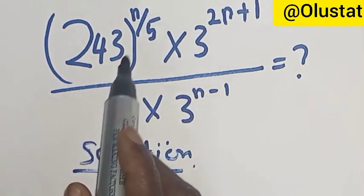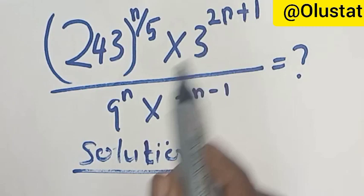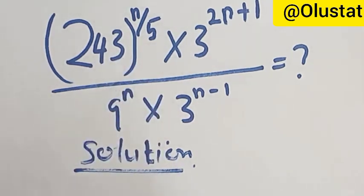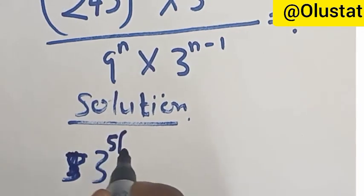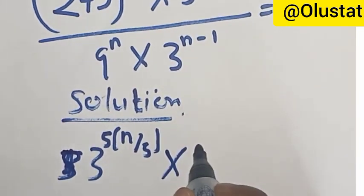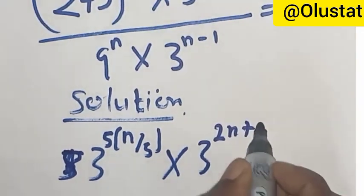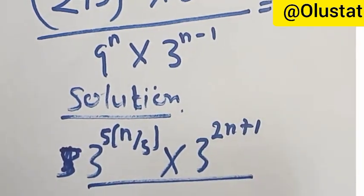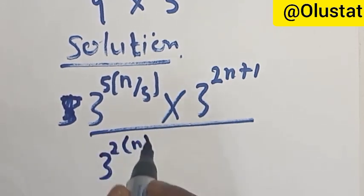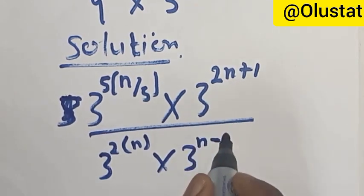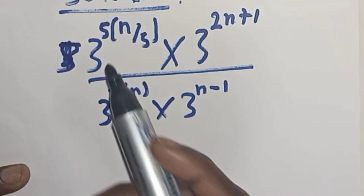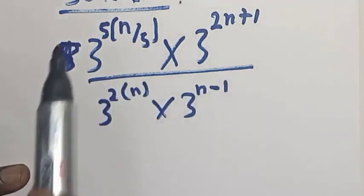The question says 243 raised to power n over 5, multiplied by 3 raised to power 2n plus 1, all over 9 raised to power n multiplied by 3 raised to power n minus 1. Now, 243 can be expressed as 3 raised to power 5, into n over 5, then multiplied by 3 raised to power 2n plus 1, over 9 raised to power n. We have 9 raised to power n expressed as 3 raised to power 2 into n, because 3 squared equals 9 — that is, 3 times 3 is 9. And 3 raised to power 5 means 3 multiplied in 5 places, which gives 243.